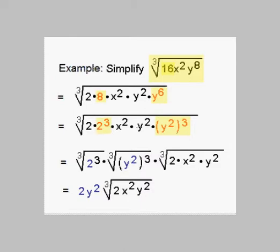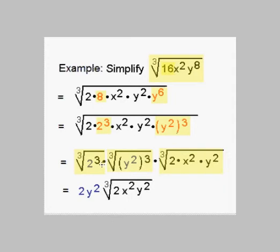Now we can use the product rule for radicals and rewrite this as a product of radicals, separating out the perfect cubes. We write it as the cube root of 2 cubed, times the cube root of y squared quantity cubed, times the cube root of the remaining factors — which are 2, x squared, and y squared. These two perfect cubes simplify: the cube root of 2 cubed turns into 2, and the cube root of y squared quantity cubed turns into y squared. So we have 2y squared outside the radical, and the cube root of 2x squared y squared remains.